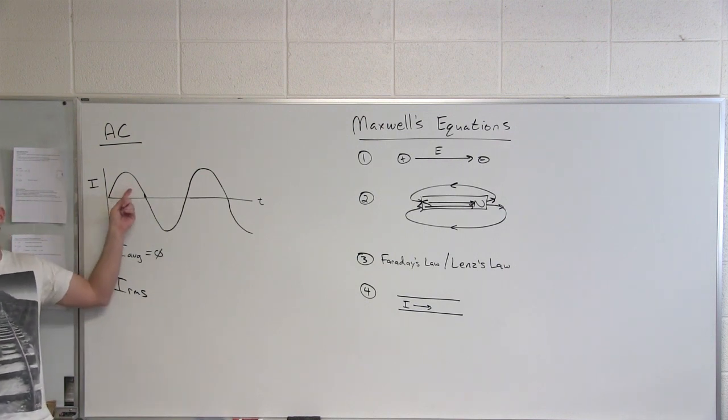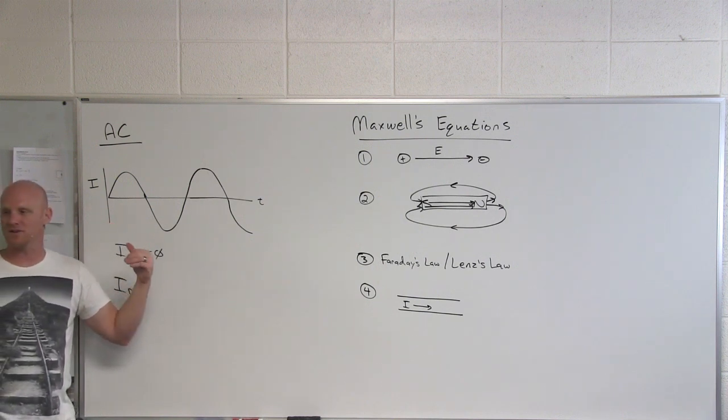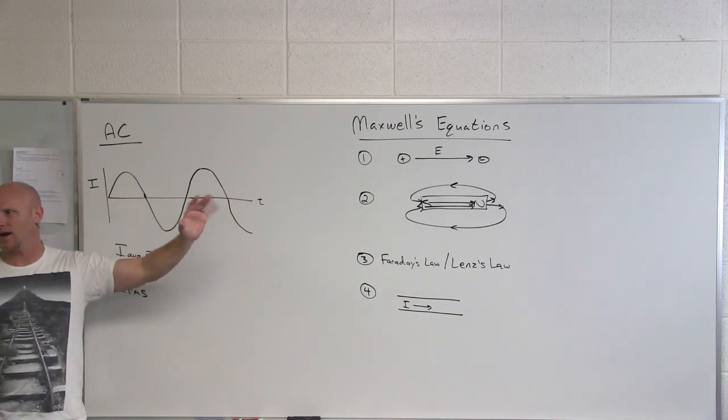If you square a positive number, what do you get? Positive number. But when you square a negative number, what do you get? Yeah, another positive number. And so then you add those all together and then take the square root.